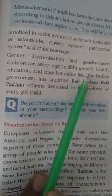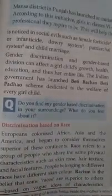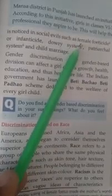Due to gender-based discrimination, a girl child's growth is affected — her health, her education, and thus her entire life. The Indian government has launched schemes for every girl child. However, this discrimination is still happening in society: the dowry system, patriarchal system, child marriage, and female foeticide are still continuing and we must stop them.